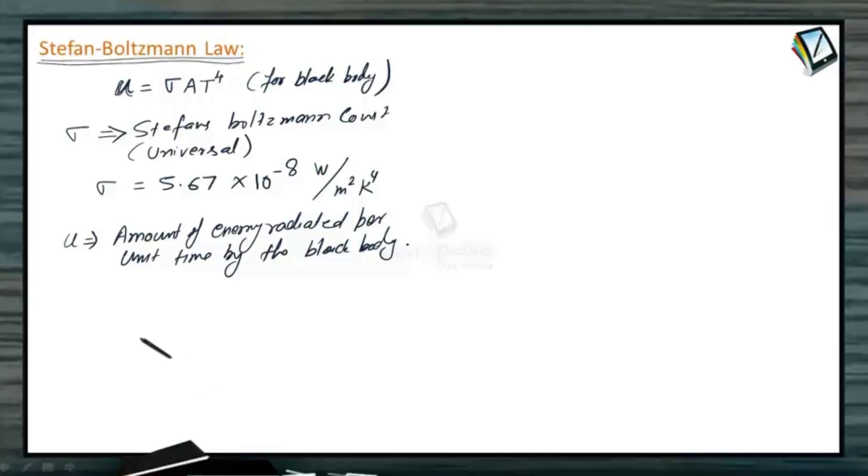And on the other hand, for any other ordinary object, this energy U can be written as small e sigma A T raised to the power 4. Where small e, letter here, I have already told you it is emissivity.